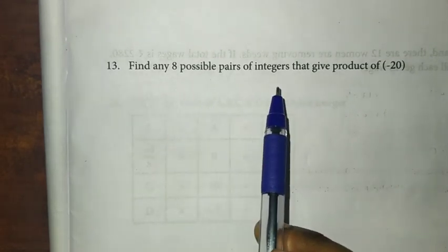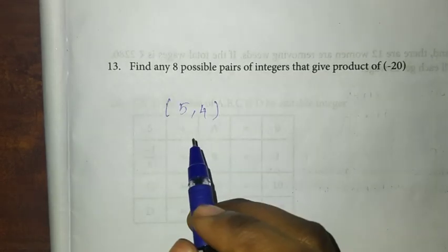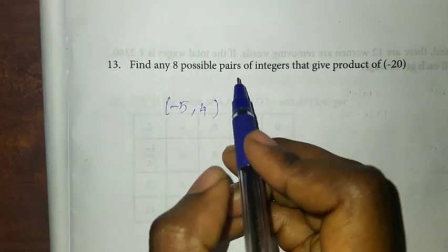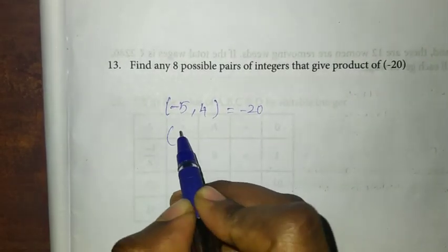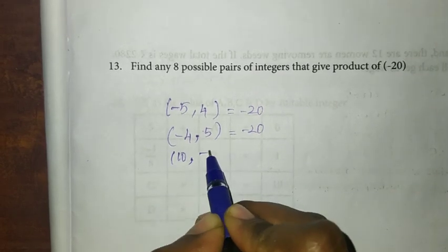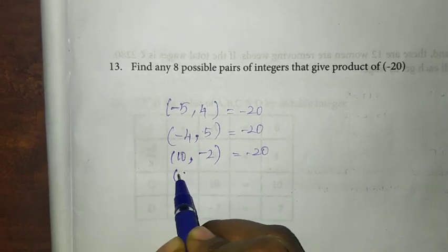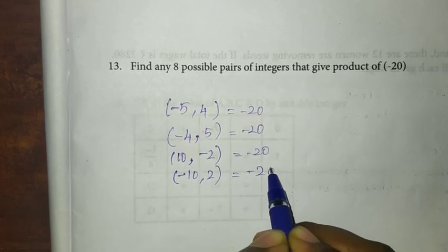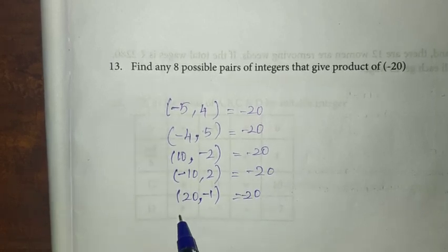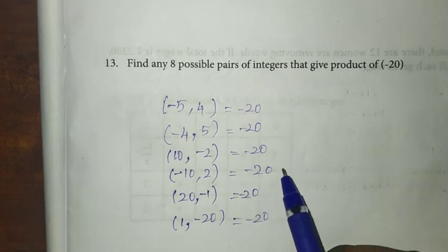Thirteenth question: find any 8 possible pairs of integers that give a product of minus 20. The pairs are: minus 5 and 4; minus 4 and 5; 10 and minus 2; minus 10 and 2; 20 and minus 1; 1 and minus 20. These 6 pairs give the product of minus 20.